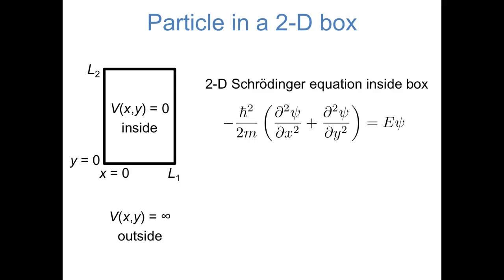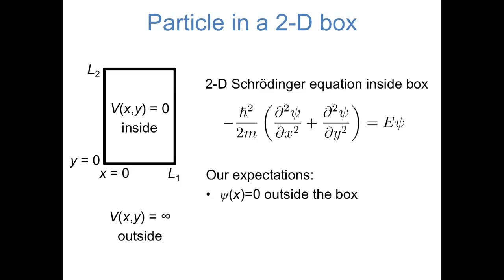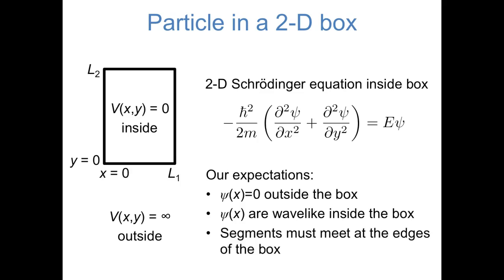Our wave functions and energies will be determined by the two-dimensional Schrödinger equation, shown here. The 2D Schrödinger equation is basically the same as the 1D Schrödinger equation, except the kinetic energy operator, rather than just having a second derivative with respect to x, now has a sum of second derivatives with respect to x and y. Based on what we've seen in the one-dimensional case, we can make some predictions. The wave functions have to be equal to 0 outside the box, we can expect wave-like functions — sines and cosines — inside the box, and because wave functions must be continuous, they have to equal 0 at the edges.